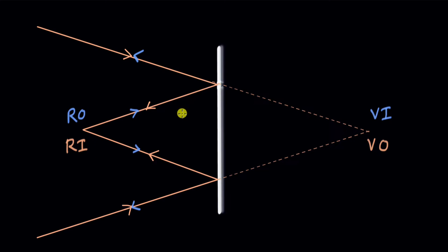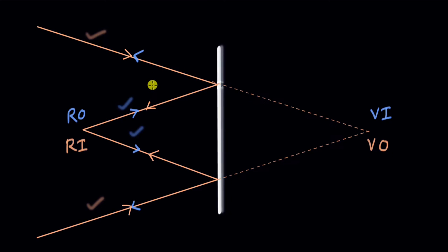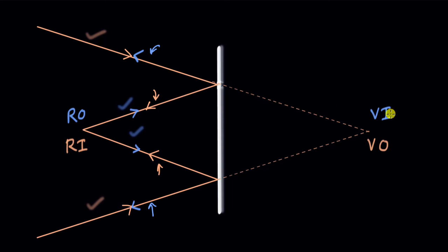One thing we can notice is that objects — whether real or virtual — are always connected to the incident ray. The incident rays diverge from a real object, while for a virtual object the incident rays appear to be meeting at that point. Similarly, images are always connected with reflected and refracted rays. The real image is connected to reflected rays, and the virtual image is connected to reflected rays that are extended and appear to come from the virtual image point.